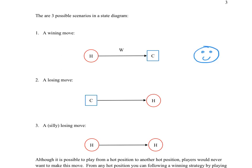A losing move — or a move that you really didn't have a choice about but had to play anyway — is when you're in a cold position. The only choices from cold positions are to play into hot positions, so you're not going to win the game from there.